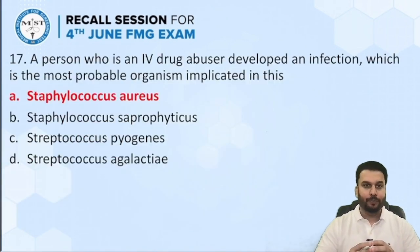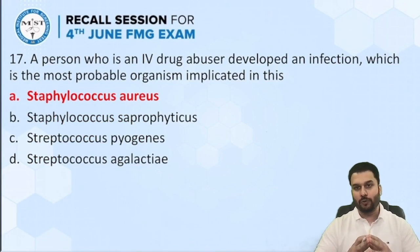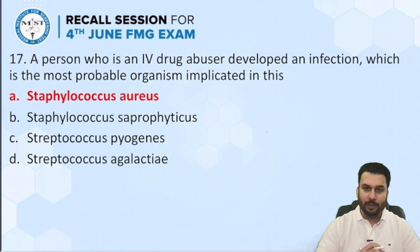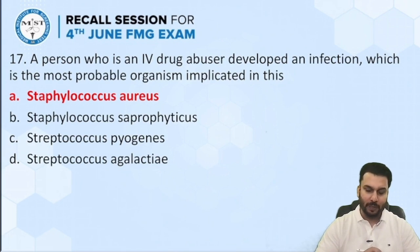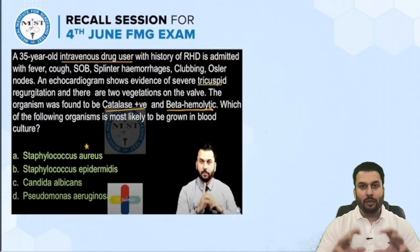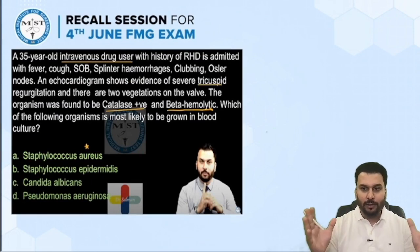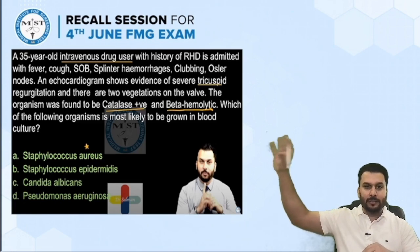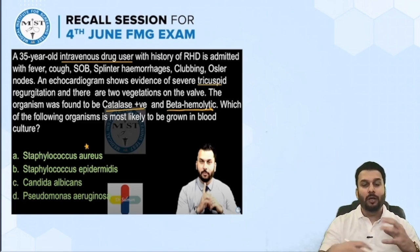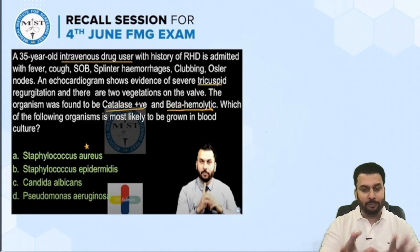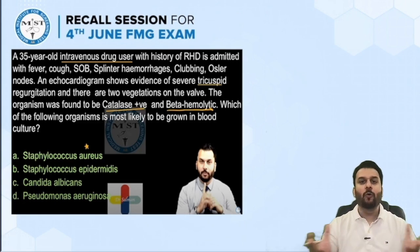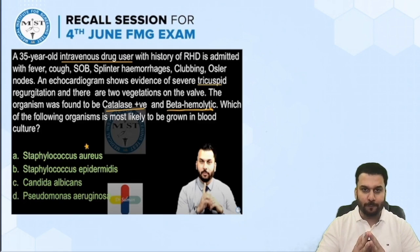Next question: a person who is an IV drug abuser developed an infection — which is the most probable organism implicated? The correct answer is Staph aureus. This was also from the 25 expected questions — a 35-year-old IV drug abuser presenting with symptoms describing endocarditis. The organism is Staph aureus.